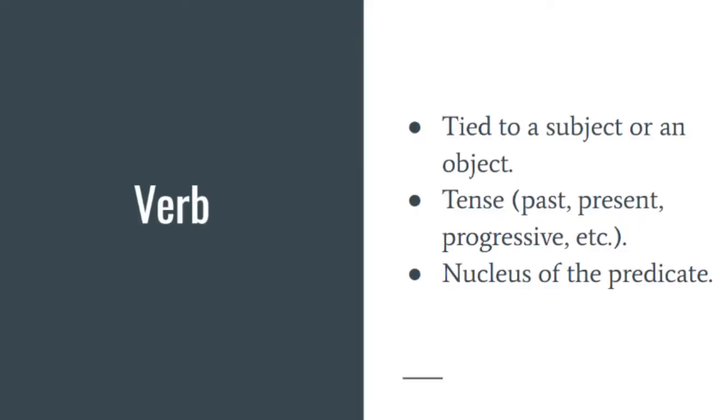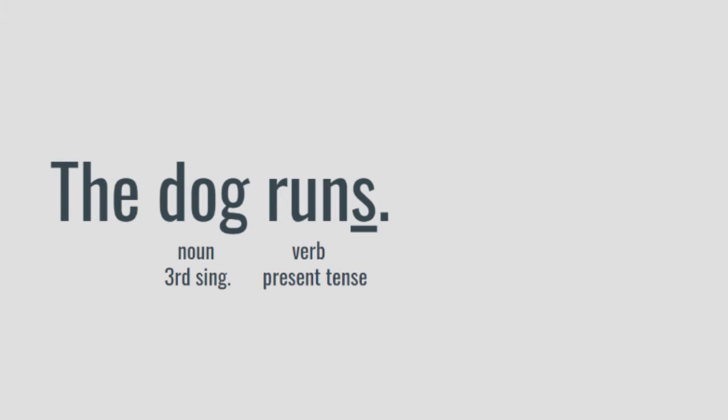How can we identify when we're dealing with a gerund being used as a verb, or a gerund used as a verbal? Let's go back to our definition of verbs and expand on it. A word used to describe an action, state, or occurrence, and forming the main part of the predicate of a sentence — such as hear, become, or happen. Grammatically, however, what makes a verb a verb is that it answers to a subject — that is, who does the thing, or suffers the thing. It is also conjugated in a specific tense, and it works as the nucleus of the predicate. In the sentence 'the dog runs,' 'runs' is in the present tense and answers to the third person singular — hence why we add the 's' — and it forms the nucleus of the predicate.